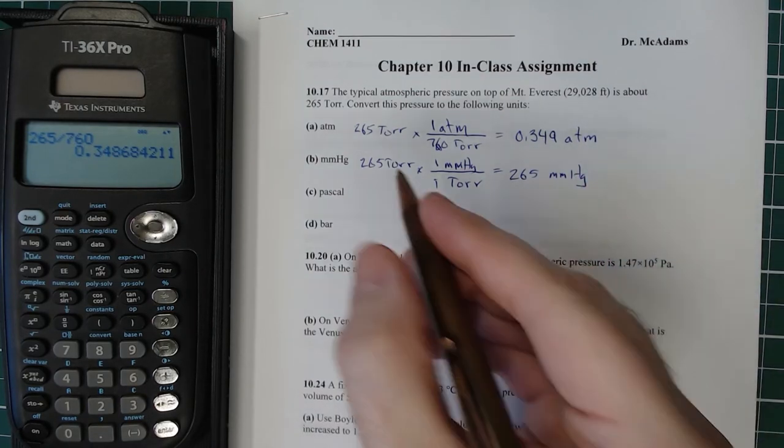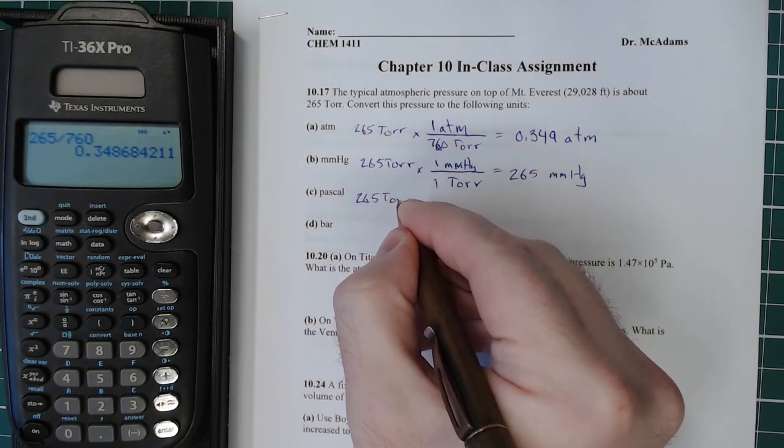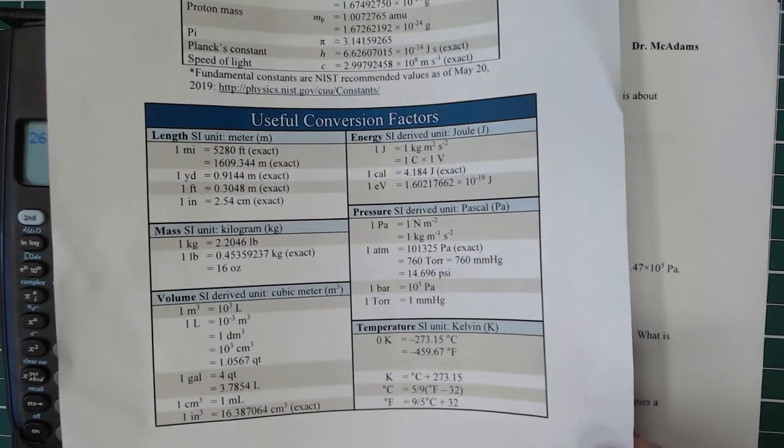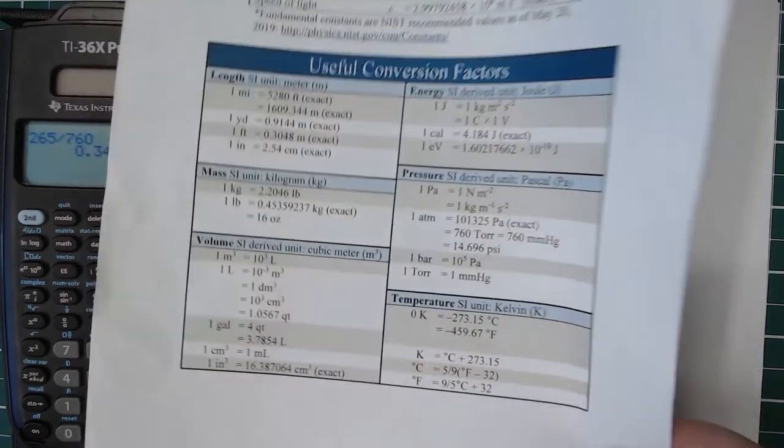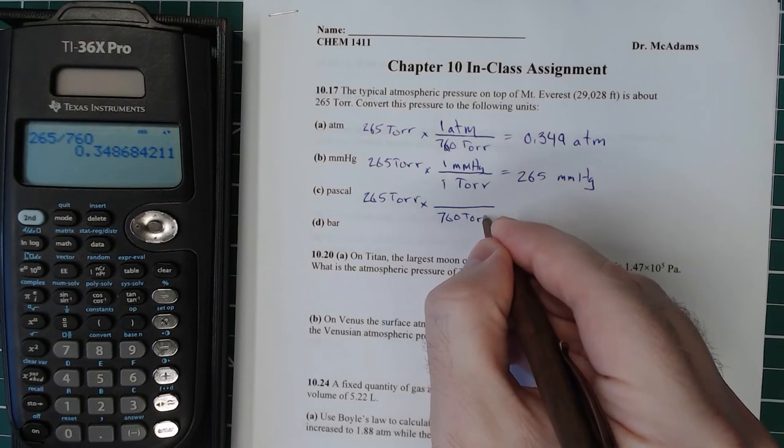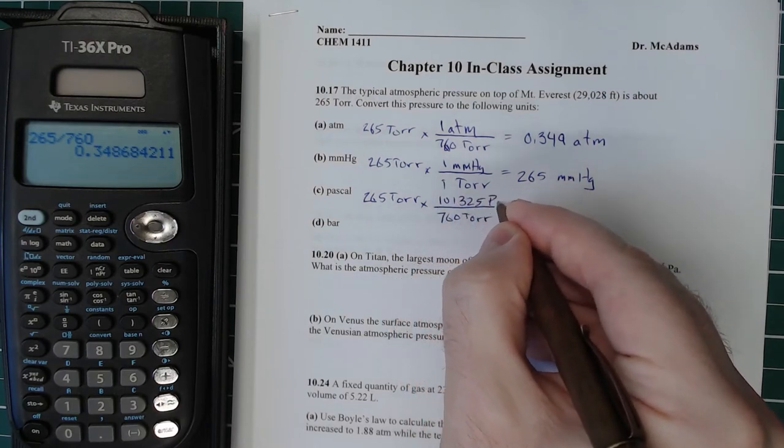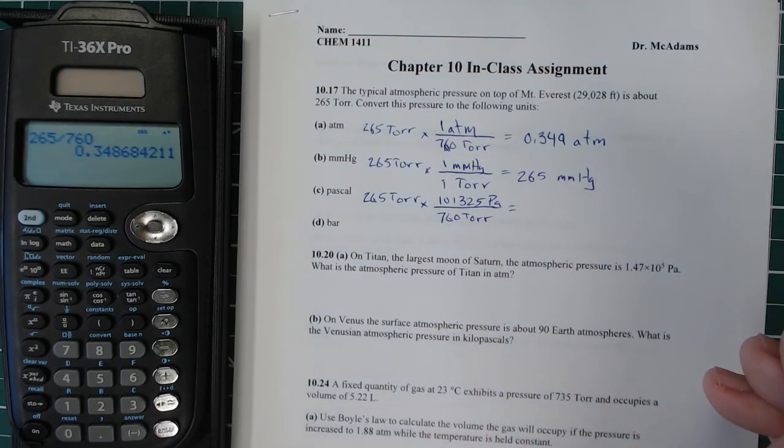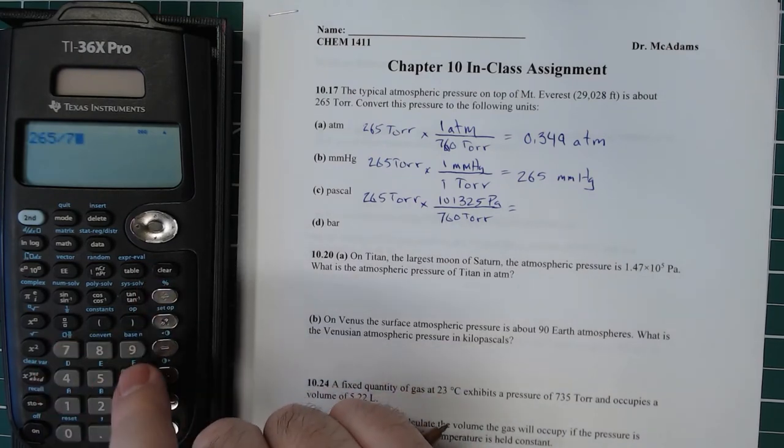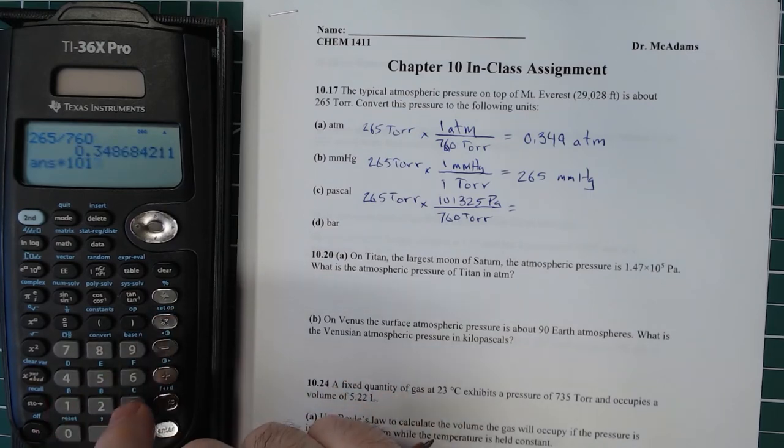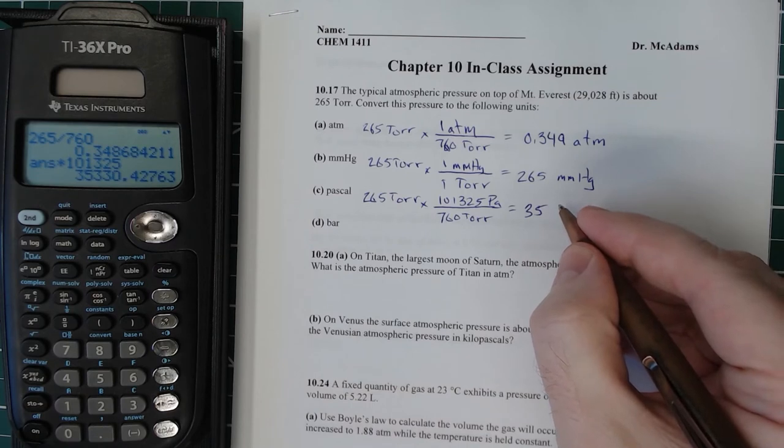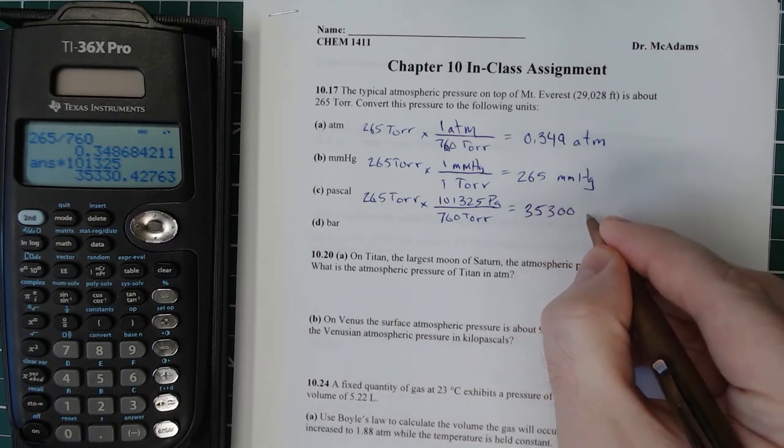Now for Pascal, we'll do 265 Torr. And we'll need a conversion between Pascals and Torr. We'll see that 760 Torr is equal to 101,325 Pascals. That is an exact conversion. So, 760 Torr is 101,325 Pascals. So, I'm going to clear this. I could have left that in there actually. 265 divided by 760. And then we'll multiply that by 101,325. And that gives us 35,000. And we have three sig figs. So, we'll call it 35,300 Pascals.